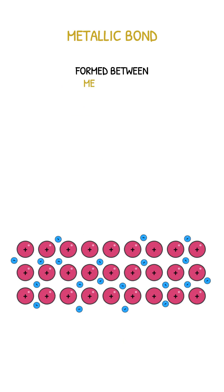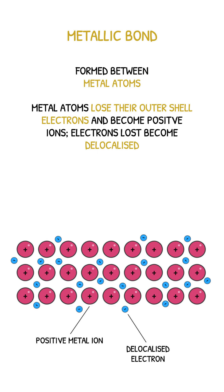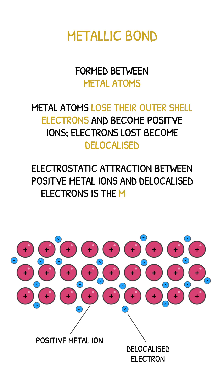Metallic bonds are formed between metal atoms. The metal atoms will lose their outer shell electrons to form positive ions, and the electrons lost then become delocalised. The electrostatic attraction between the positive metal ions and the negative delocalised electrons is the metallic bond.